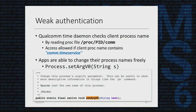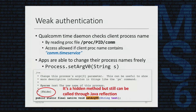Interestingly, apps can easily change their process name to whatever they want because there is an API in the framework for doing that. Although the API process.setArgV0 is a hidden API — marked as hidden and not visible in the Android SDK — apps can still make use of this hidden API by Java reflection.